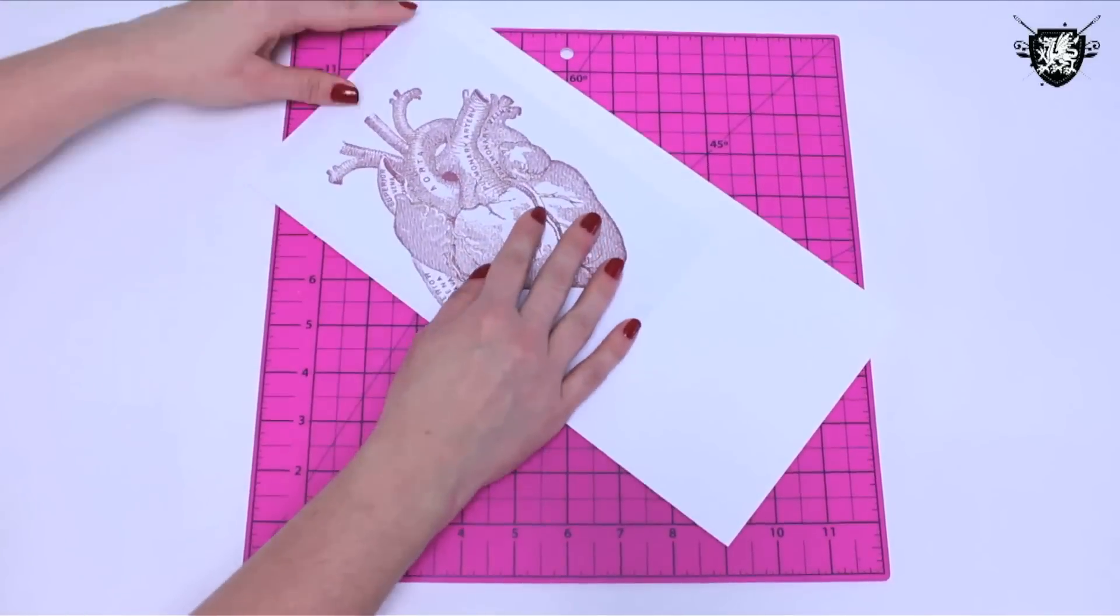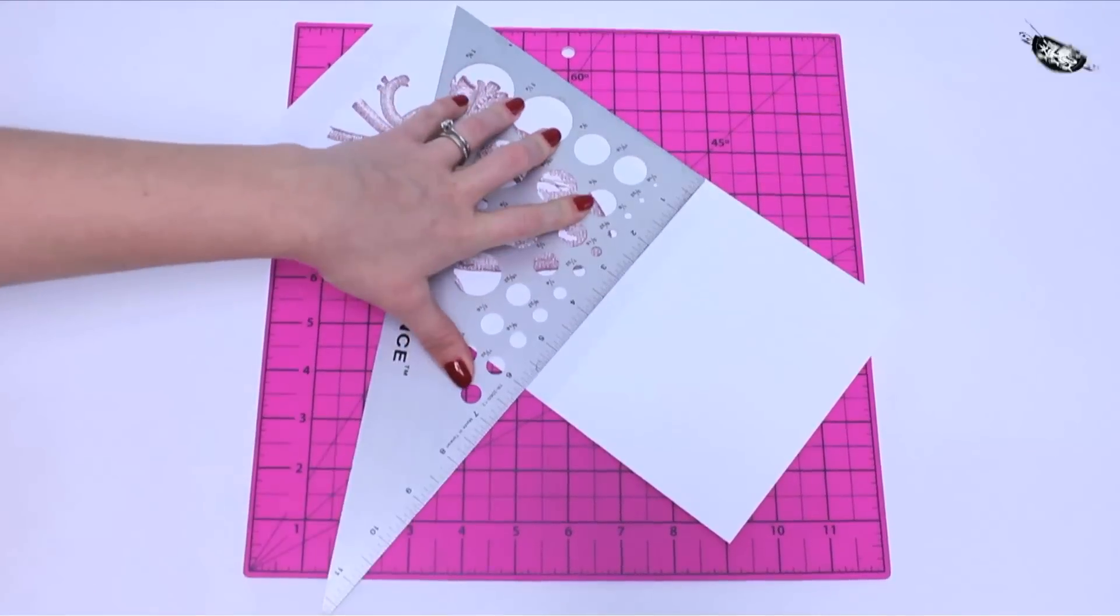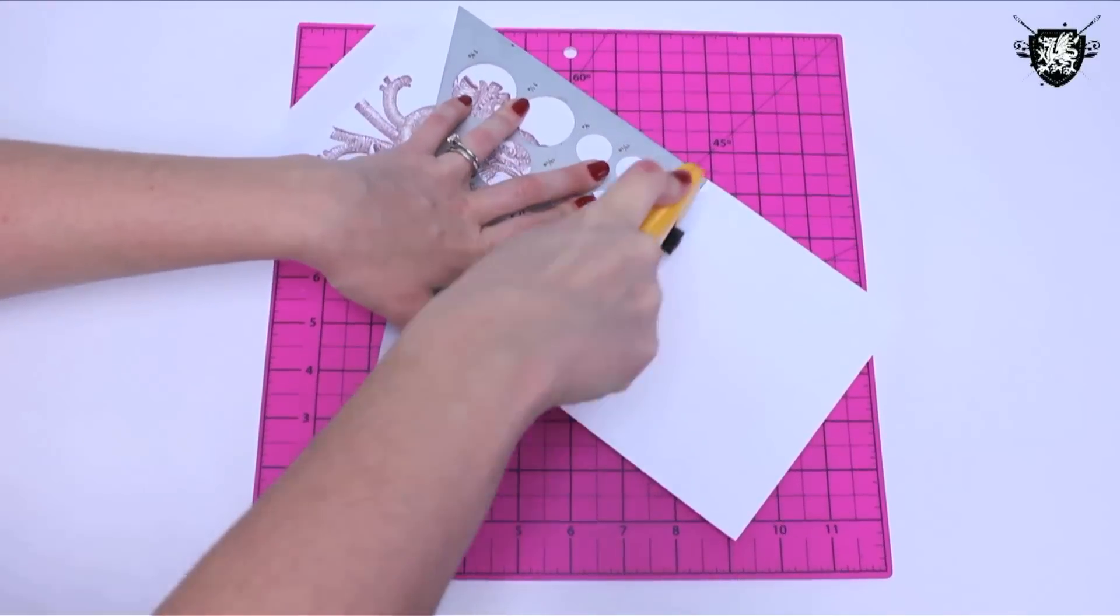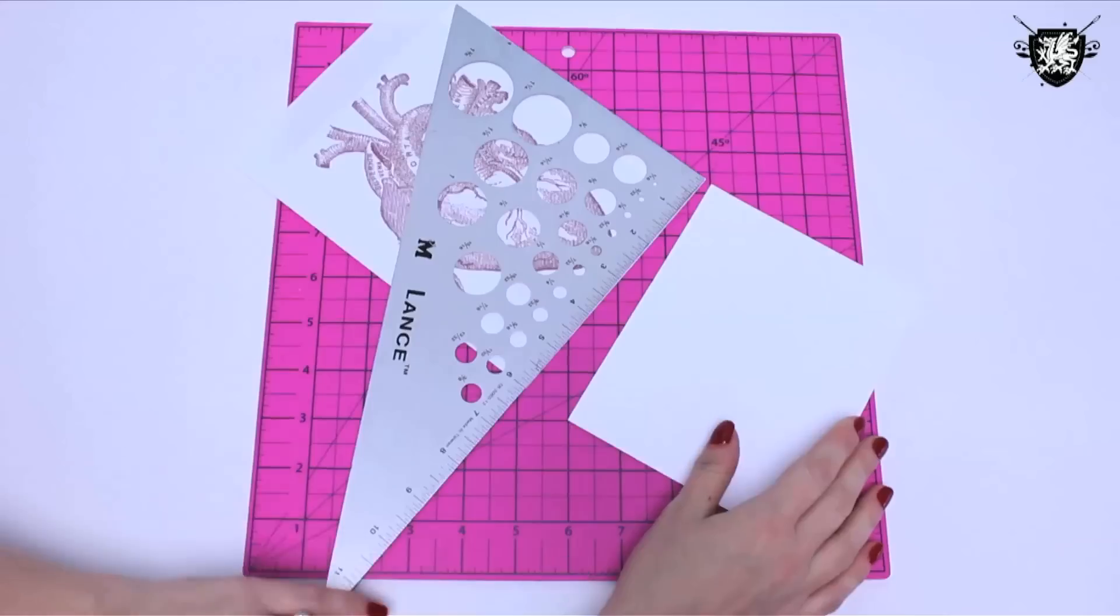Place your image on top and use a straight edge and a cutter to cut the cardstock to fit the area of your heart. You can use that other piece of cardstock you cut off for another card project.